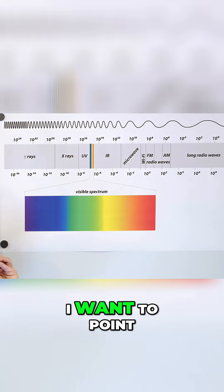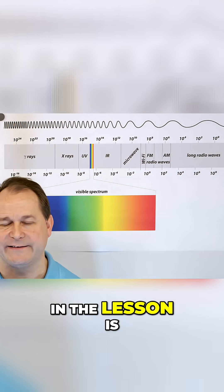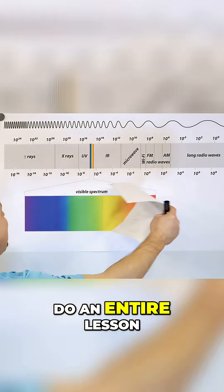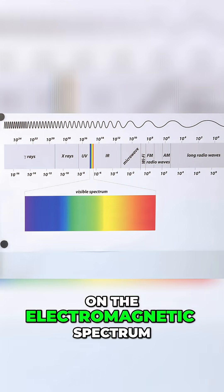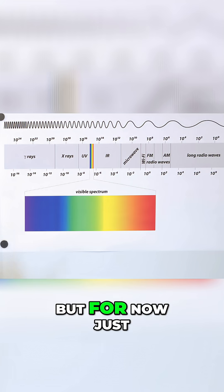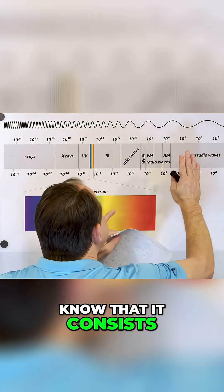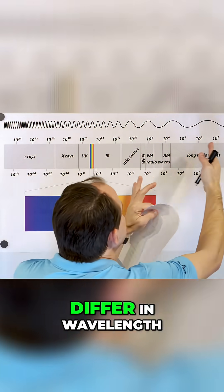Now the one thing I want to point out, because it's going to become important later in the lesson—and I'm going to do an entire lesson on the electromagnetic spectrum another day—but for now, just know that it consists of waves which can differ in wavelength.